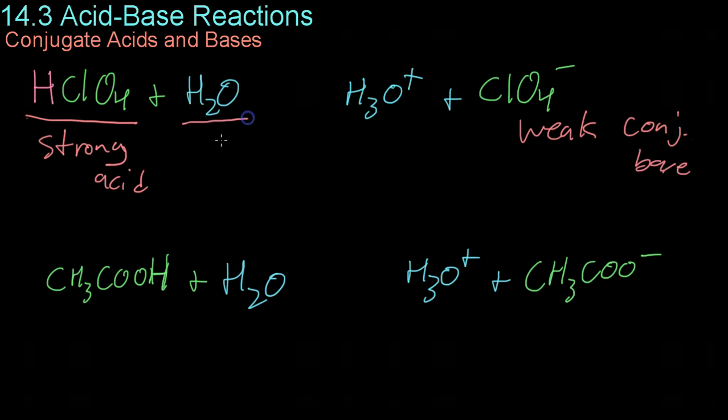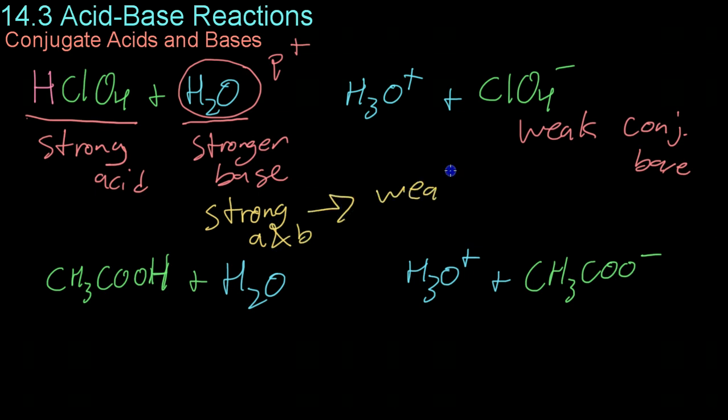Now water in this instance acts as a stronger base than the perchlorate ion. This means that it will compete more strongly for the free protons in solution and therefore accept more of them. And as a general rule, what ends up happening is that reactions will proceed such that they go from strong acids and bases to products that are weaker acids and bases. So in this case, we know that the reaction will proceed more in the direction of hydronium and perchlorate than it will backwards in the direction of perchloric acid and water.